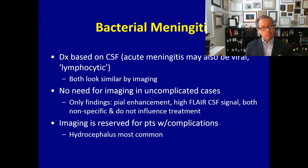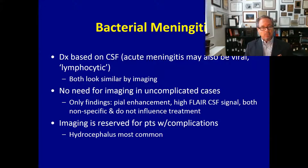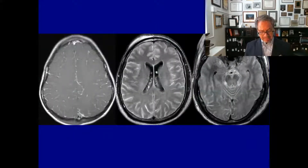The imaging findings are really not going to help in the management of the patient. The most common findings are pial enhancement and high signal on FLAIR images, but these are not helpful in determining adequate treatment. Imaging is reserved for patients with complications, and hydrocephalus tends to be the most common complication. In very young children, an enlarging head circumference is generally an indication of hydrocephalus; in adults we need imaging to exclude that possibility.